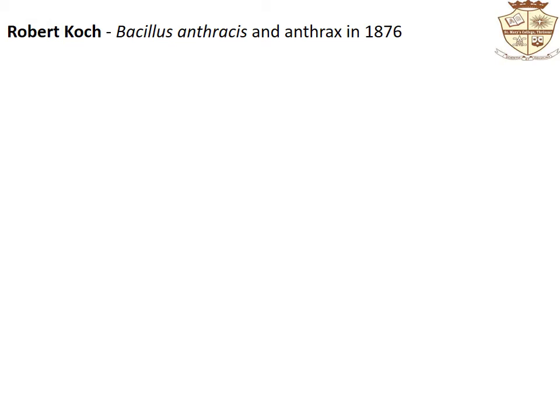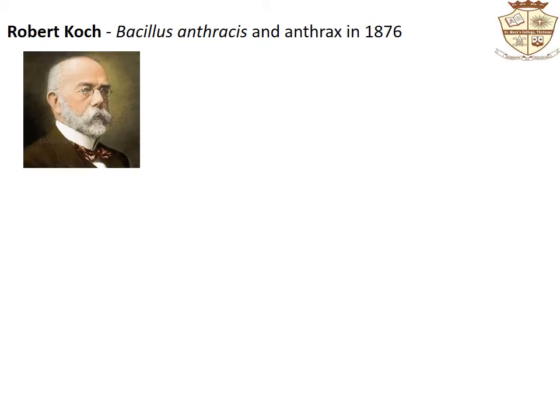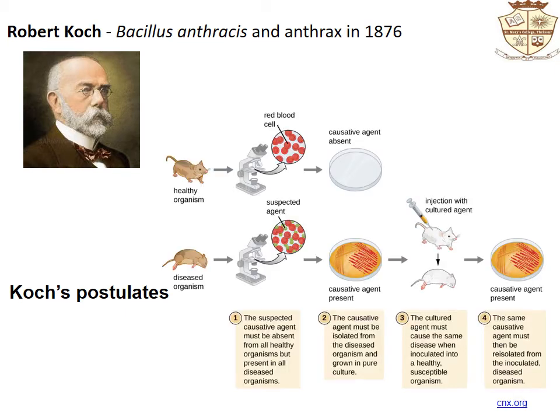The German physician Robert Koch established the relationship between Bacillus anthracis and anthrax in 1876. He injected healthy mice with materials from diseased animals and the mice became ill. After transferring anthrax by inoculation and culturing of bacilli through a series of mice and beef serum, he proved the relationship between a microorganism and a specific disease. He proposed Koch's postulates: the microorganism must be present in every case of the disease but absent from healthy organisms; the suspected microorganism must be isolated and grown in pure culture; the same disease must result when the isolated microorganism is inoculated into a healthy host; and the same microorganism must be isolated again from the diseased host.